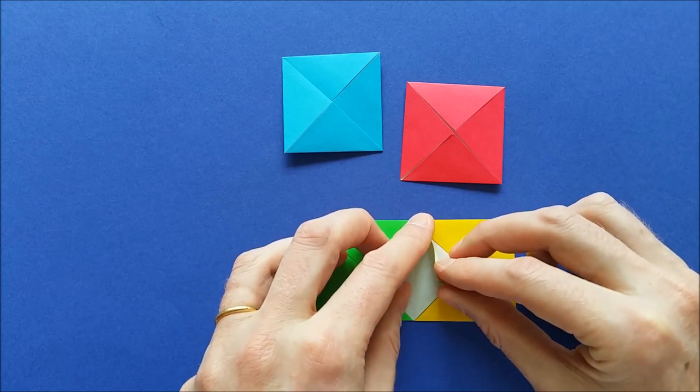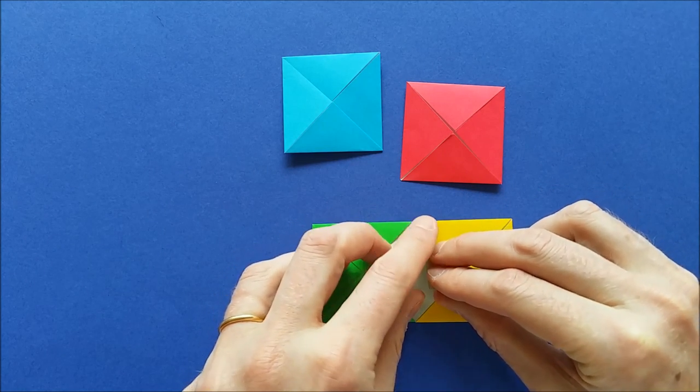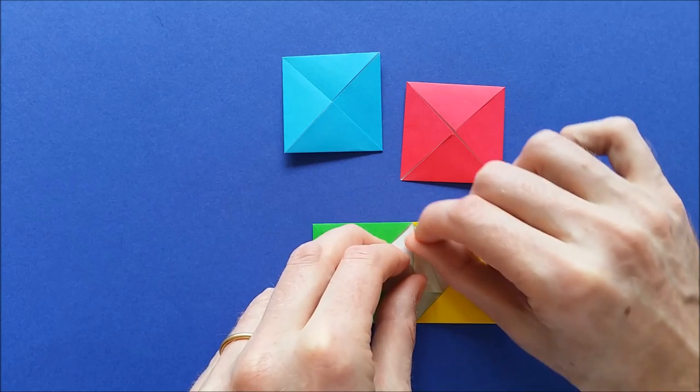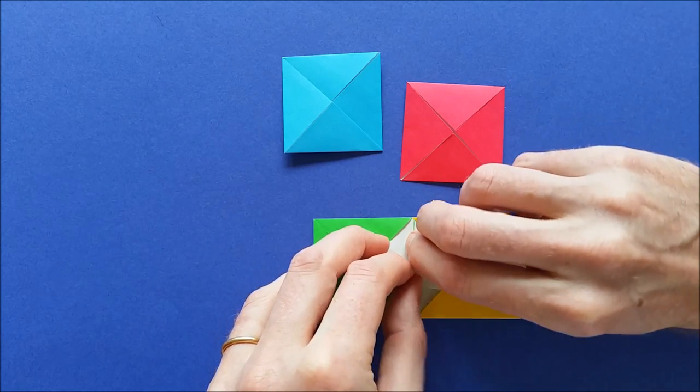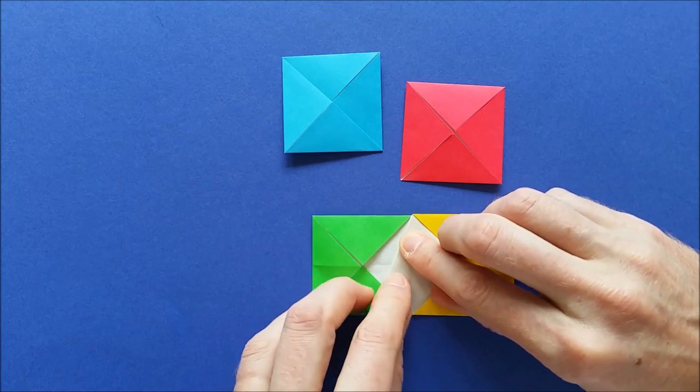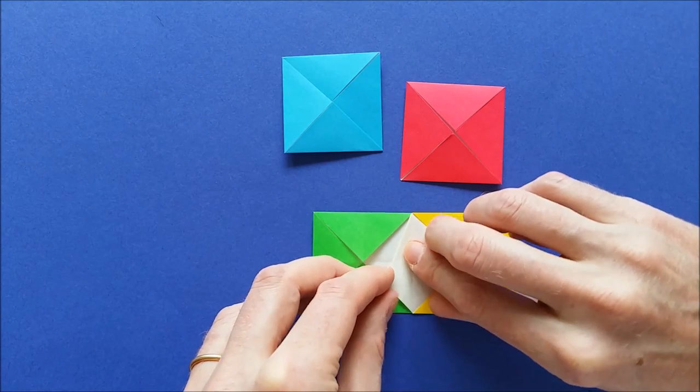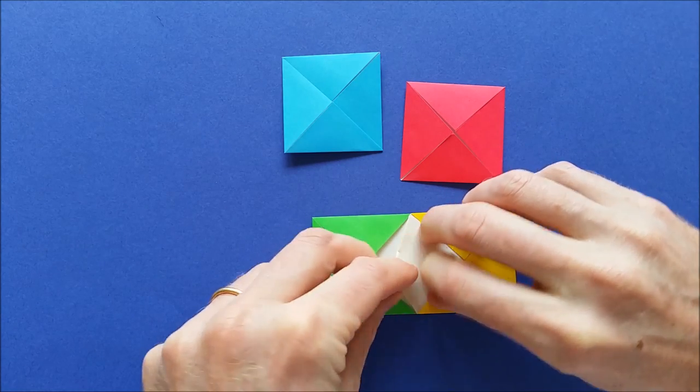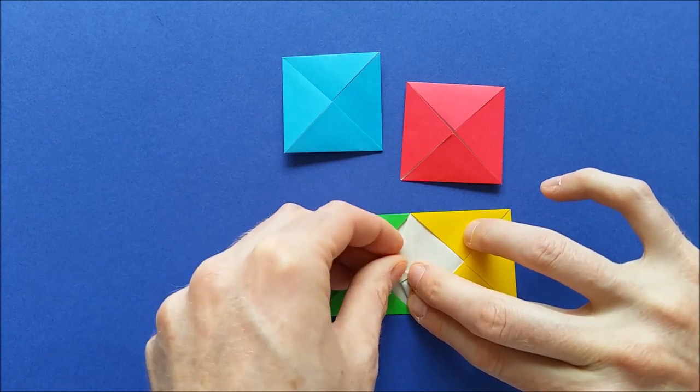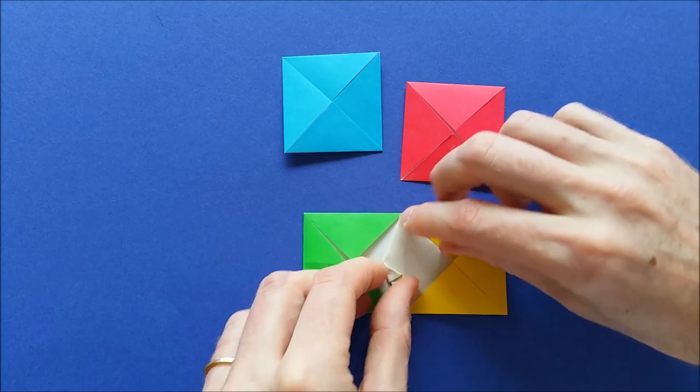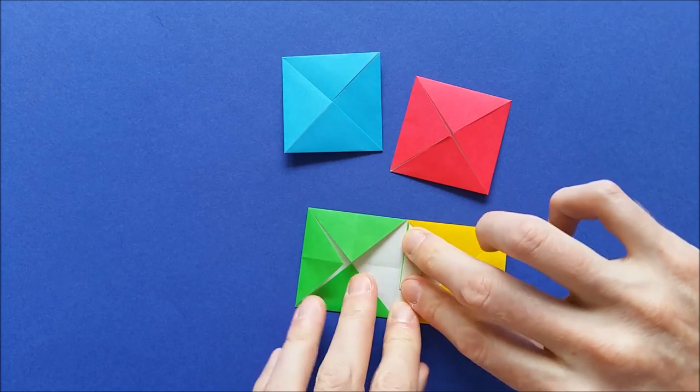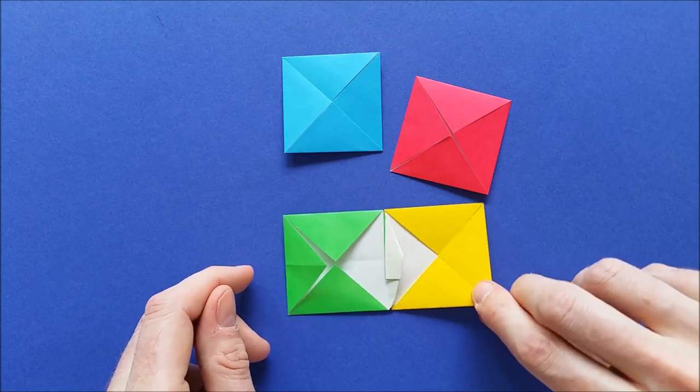And fold the flaps in, starting at one end like this. Then fold the flaps again starting on the other end. And rotate again the flaps to the other side. And that's it. Your two pixels are now joined.